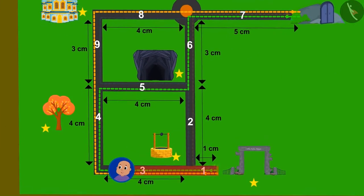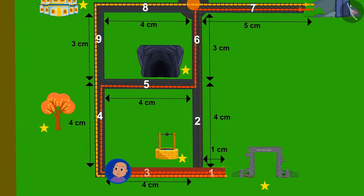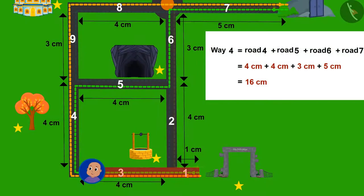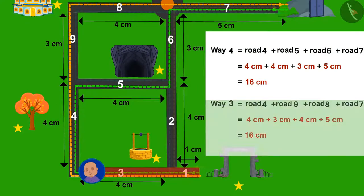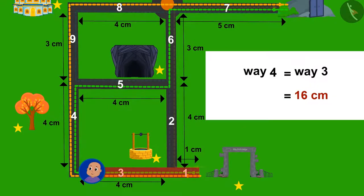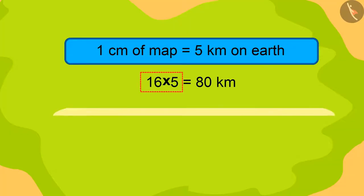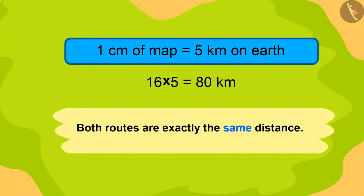Now, if Bablu has two exit routes, are these two paths at equal distance? Find an answer to this question by pausing the video. Absolutely right. Both paths are exactly at the same distance. The total distance on the map is 16 centimeters. So, the actual distance would be 16 multiplied by 5. That is 80 kilometers.